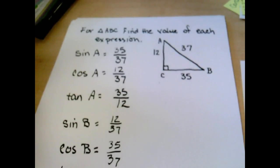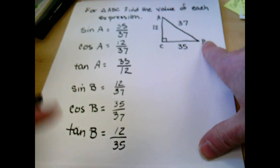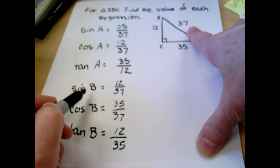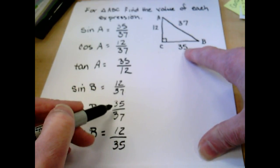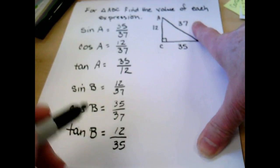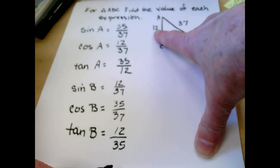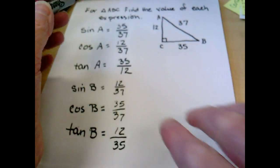We can do the same thing. If we look at our angle B, sine would be opposite over hypotenuse, so 12 over 37. Cosine is 35 over 37, because it's adjacent over hypotenuse. Tangent, opposite over adjacent, 12 over 35.